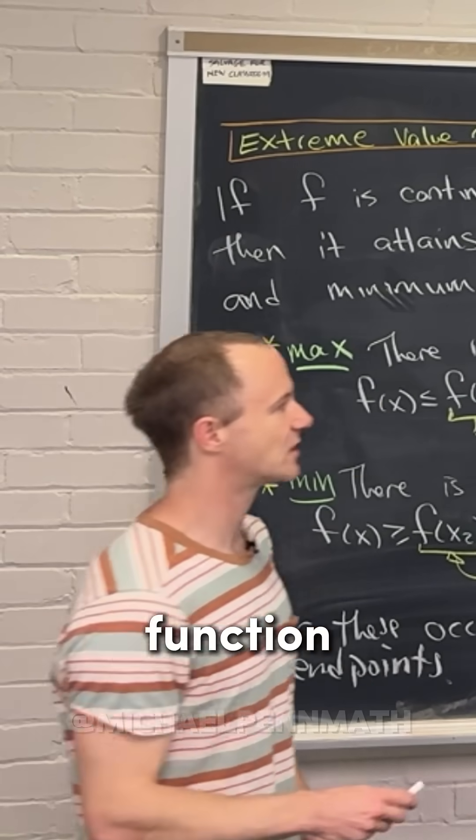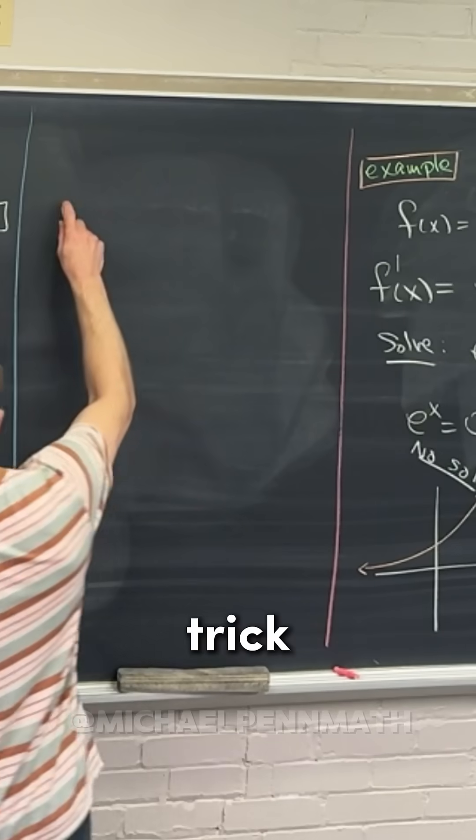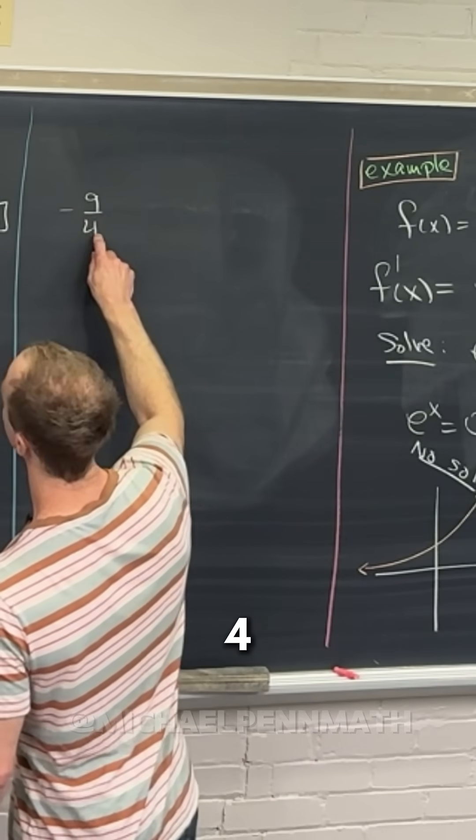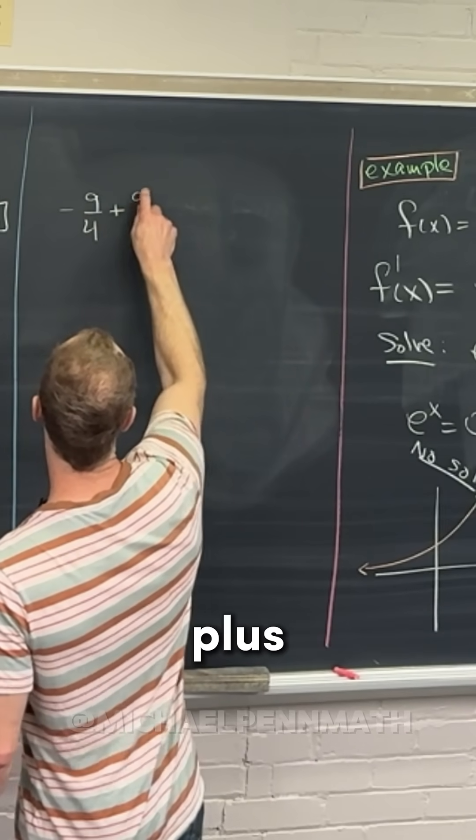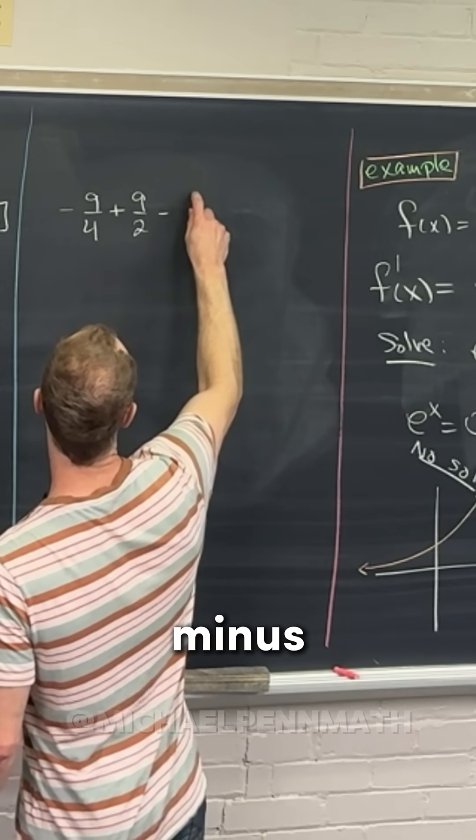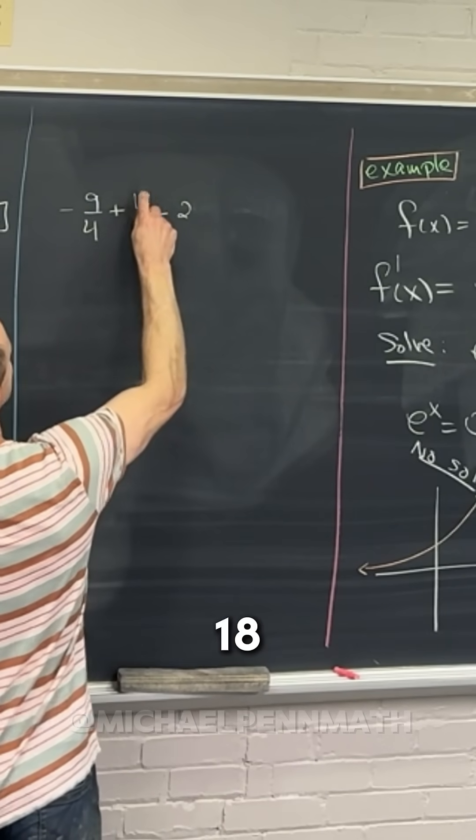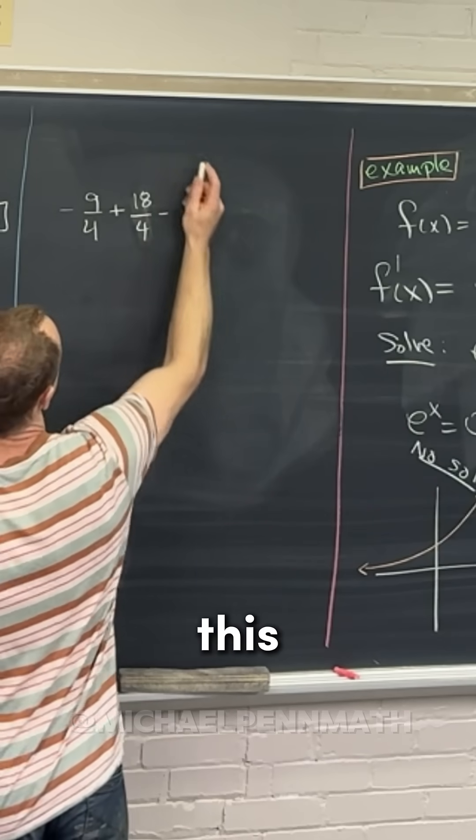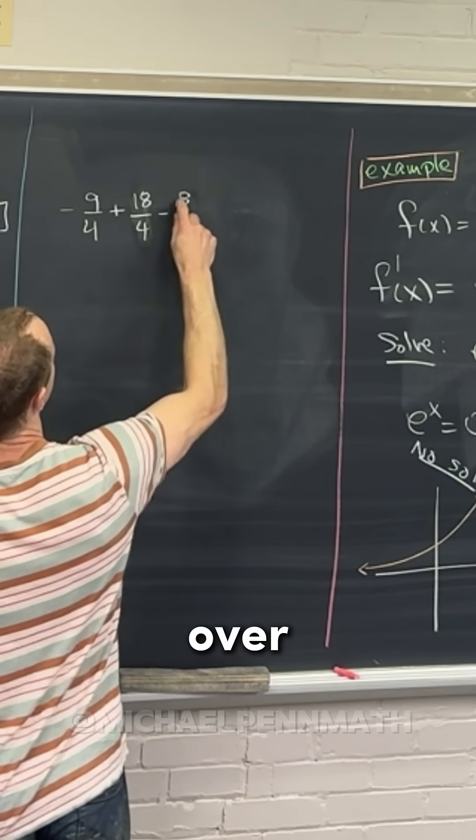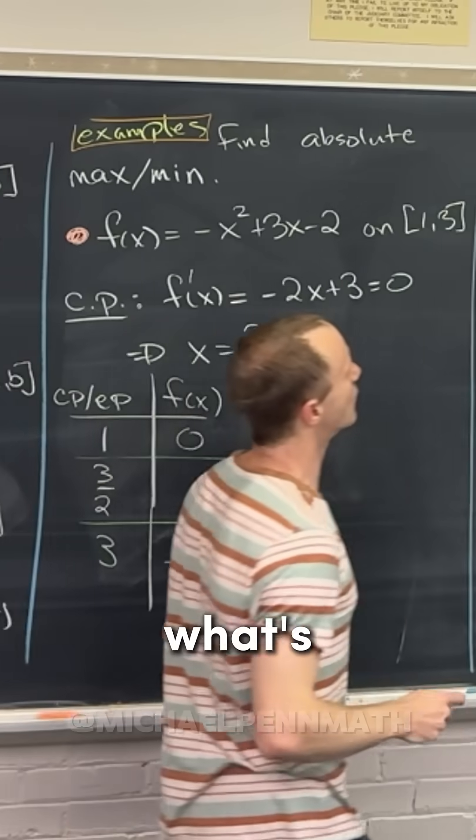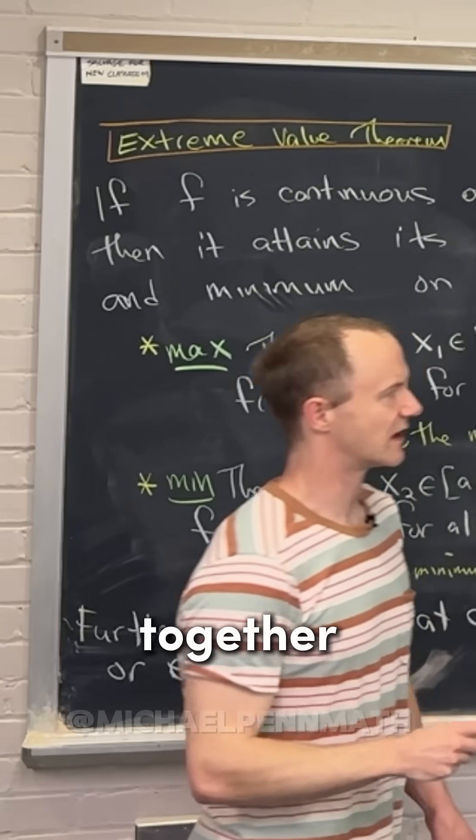Okay, then if we plug 3/2 into the function, well, I mean that's a little bit trickier. Notice we have negative 9/4 plus 9/2 minus 2. But let's maybe write this 9/2 as 18/4 and write this 2 as 8/4.